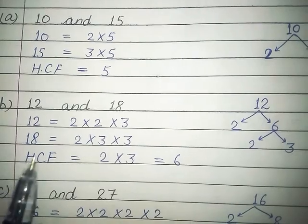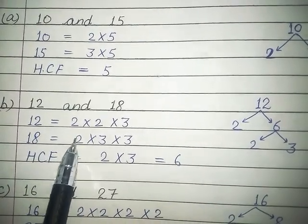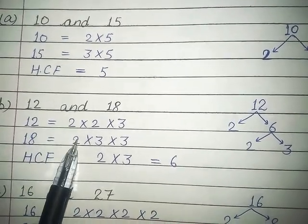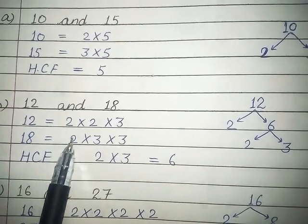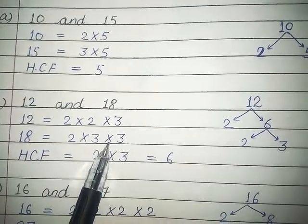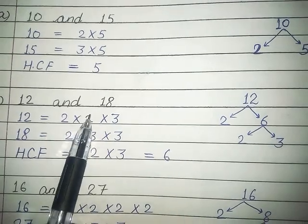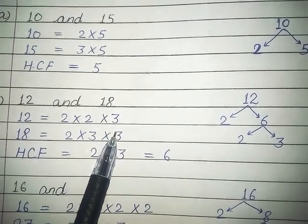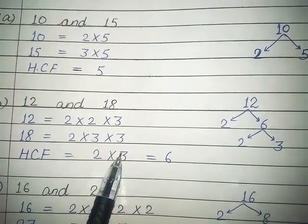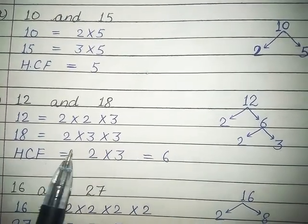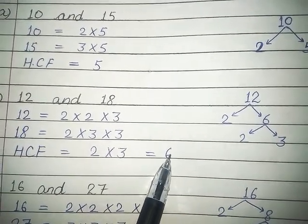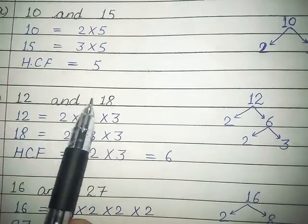Now what do we find out, students? We find out those factors that are present in both — meaning the common factors. You can see 2 is common in both. Then looking at 3: a 3 is present in both as well. So we write each common factor once. Now multiply them: 2 into 3. So the HCF of 12 and 18 is 6.